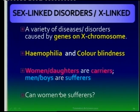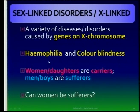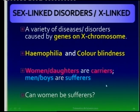This brings us to sex-linked disorders. We also refer to it as X-linked, because it's normally a disease that is carried on the X chromosome. That is why we always say women or daughters are the carriers where men or boys become the sufferers. And the two diseases that you have to know for exam purposes is hemophilia, which is the inability of the blood to clot, which means that they are bleeders, and colorblindness. These are the two sex-linked disorders, because they are carried specifically on your X chromosome.